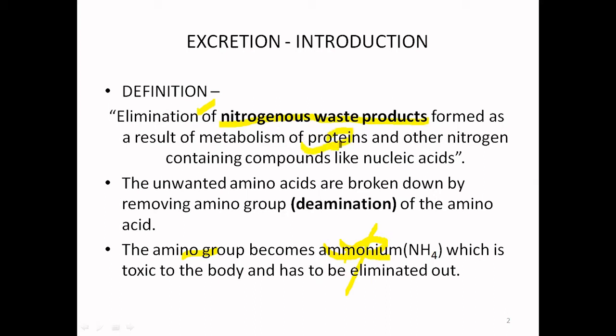Not only proteins — there are also other important components which contain nitrogen, called nucleic acids. The metabolism of proteins, amino acids, and nucleic acids produces nitrogenous waste products, which if present in the blood may cause damage to different tissues and cells. Because of that, they have to be eliminated. In order to form these nitrogenous waste products, the amino acids are broken down and the amine group is removed from the amino acids — a process we call deamination. Let us move on to the next slide.